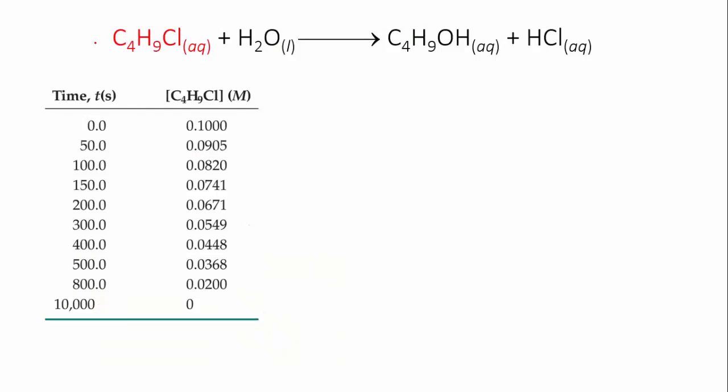Okay, now let's look at some actual data from a rates experiment. The reaction equation is here. We're going to react butyl chloride with water to give butanol and hydrochloric acid.